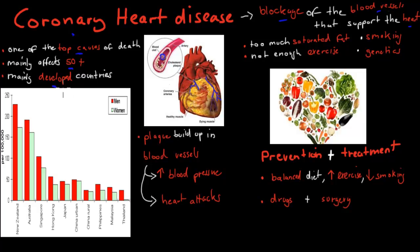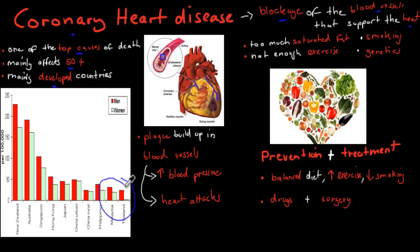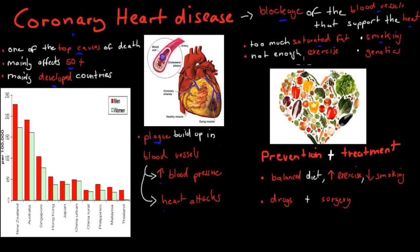Coronary heart disease mainly affects developed countries. For example, Australia and New Zealand have very high rates of death from heart disease, whereas places like Thailand, Malaysia, and rural China have fewer problems because they don't have access to as many problematic foods and their lifestyle isn't as bad. The plaque buildup blocks blood vessels supplying the heart, leading to increased blood pressure and higher risk of heart attacks. Causes include too much saturated fat in the diet from animal fats, smoking, not doing enough exercise, and certain genetic predispositions.